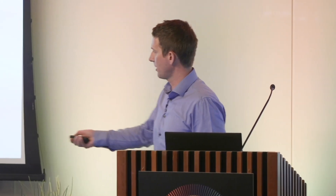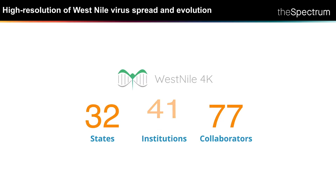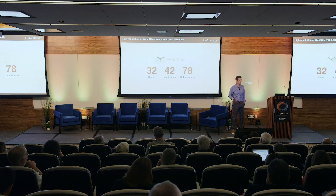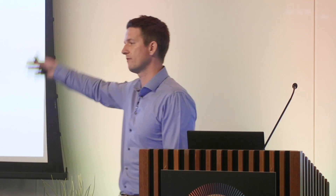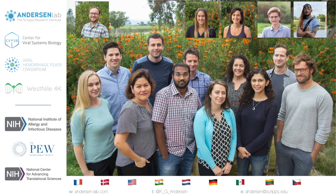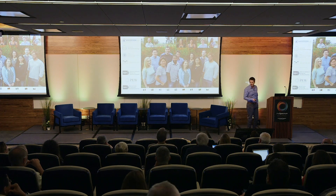To summarize, we now have 32 states with coverage of all the states that have West Nile in this country, 41 institutions signed up — mostly public health labs but also vector control labs and academic labs — across 78 collaborators. This is a huge project, and of course it can build a model for other viruses we might not yet know or that might not yet be in this country. By partnering with academics and public health labs we can make this happen. Thank you to my lab at Scripps as well as collaborators at the Center for Viral Systems Biology, the Viral Hemorrhagic Fever Consortium, and the West Nile 4K Project.